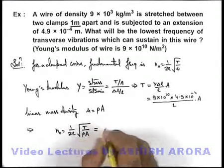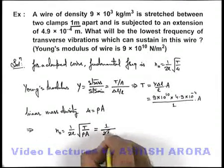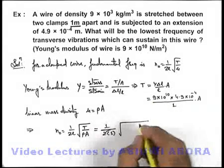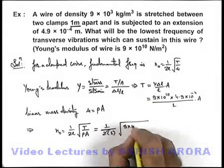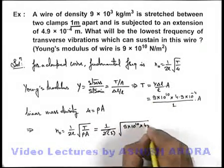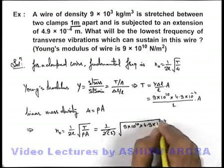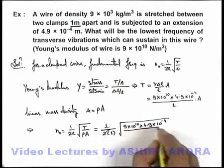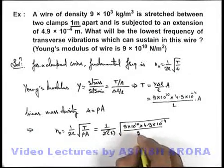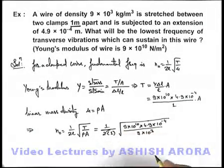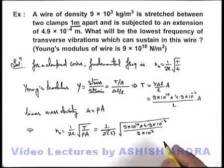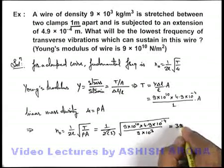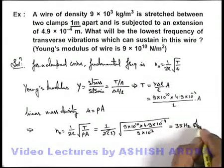If we substitute the values, it will be 1/(2 × 1), and at the root we can take tension as 9 × 10¹⁰ × 4.9 × 10⁻⁴. This area gets cancelled out, divided by the density 9 × 10³. On simplifying the expression, we'll get the frequency to be 35 Hz. That will be the answer to this problem.